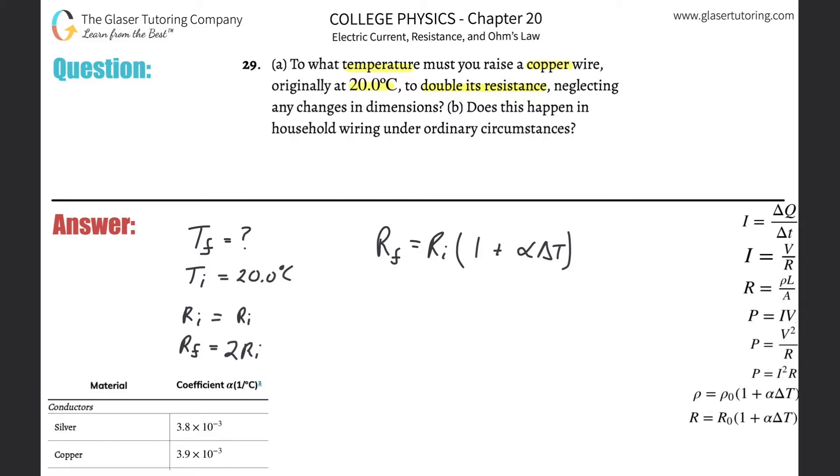So why don't we start plugging in things that we know. What are we going to plug in for the final resistance? We don't know the value but we do know its relationship to the initial, so let's just plug that in: 2 times the initial resistance. What's the initial resistance? Well, it's just the initial resistance, right? And then 1 plus the alpha value of copper, so that's 3.9 times 10 to the minus 3, multiplied now by the change in temperature. What I want to do here is - you can leave it as change in temperature, that would be totally fine - but what I'm going to do is expand on that. I know the temperature change is the final minus the initial, and therefore I'm going to just plug in the temperature that I know. I know the initial temperature, so I'm going to plug in Tf minus 20 degrees Celsius.